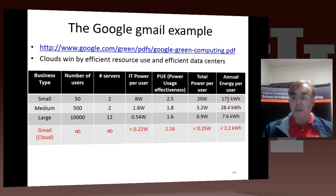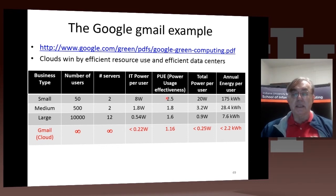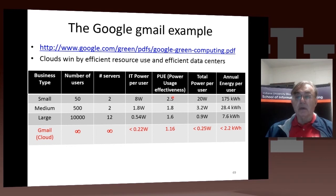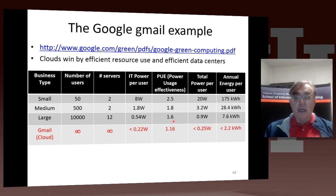This is just due to the economies of scale, but also just to the data center itself. There's the Power Usage Effectiveness (PUE), which says that if the power use is exactly the power needed by the CPUs or servers, that's a PUE of one. If it's 2.5, it means you're using 2.5 times as much power for your data center as what you need for the servers — so that's not satisfactory. And you can see modern clouds here down at 1.16.